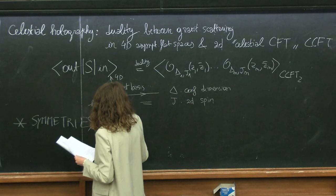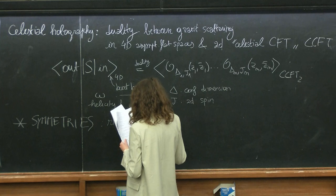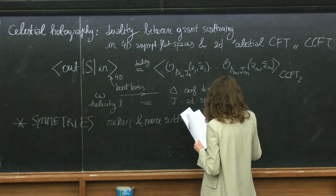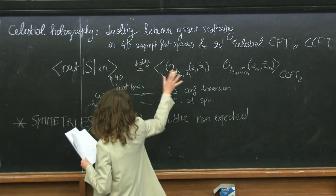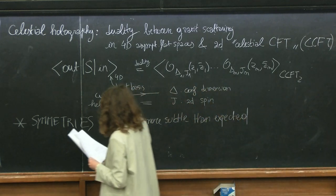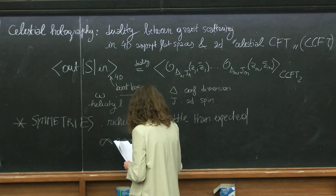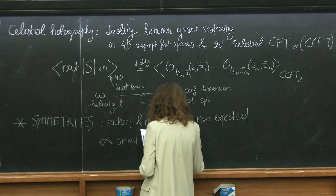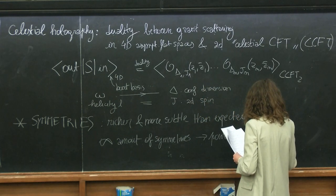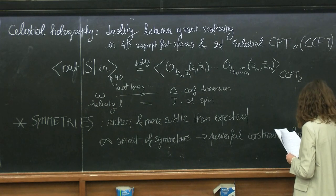People are slowly understanding that these symmetries are much richer and more subtle than expected. The goal is to use, to their full extent, all these symmetries to constrain this problem and the celestial CFT. We have infinite towers of symmetries, and these provide very strong constraints. I will explain precisely how these constraints manifest themselves for conformal field theories.